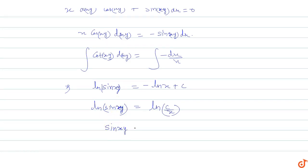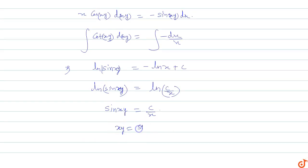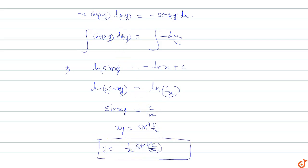Take anti-log on both sides, so sin(xy) equals to c upon x. Or we can write the solution as: xy equals to sin inverse of c upon x, so y equals to 1 upon x times sin inverse of c upon x. This is the solution of the differential equation x into y dx plus x dy into cos(xy) plus sin(xy) into dx equals to 0.